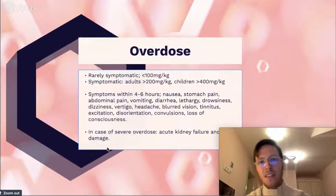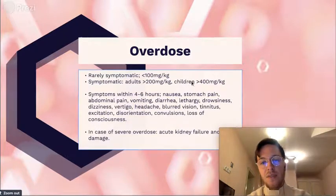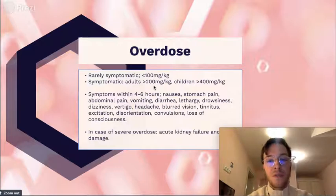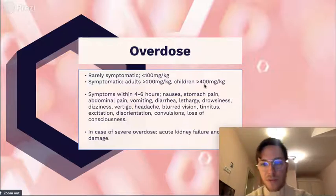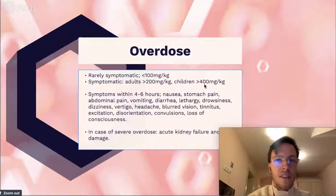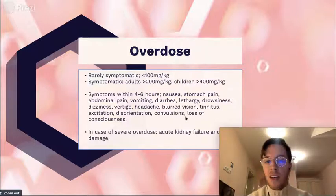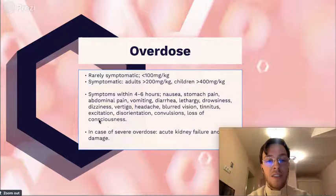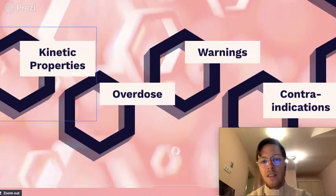In some cases, someone will use an overdose of ibuprofen. It's rarely symptomatic if less than 100 mg per kilogram is used. It can be symptomatic in adults upwards of 200 mg per kilogram and for children upwards of 400 mg per kilogram. Symptoms usually start four to six hours after intake and mostly include nausea, stomach pain, abdominal pain, vomiting, blurred vision, and in severe cases even acute kidney failure and liver damage.